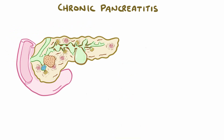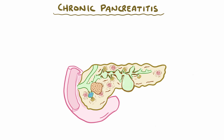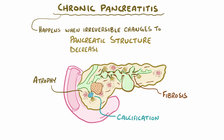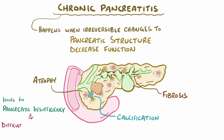As a quick recap: chronic pancreatitis happens when irreversible changes to the pancreatic structure—like fibrosis, atrophy, and calcification—begin to decrease the functions of the organ. Eventually, this leads to pancreatic insufficiency, which makes it difficult to digest food, as well as the destruction of alpha and beta cells, which makes it difficult to produce hormones like insulin.